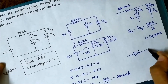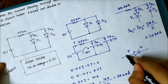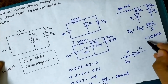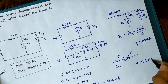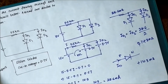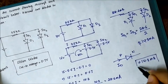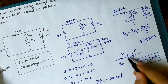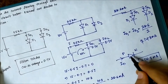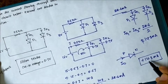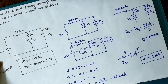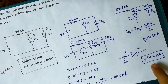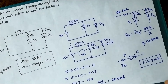The current is flowing from p to n through the diode, and it is positive — positive 14.3 milliampere. This means our assumption that the two diodes are on is correct, because the current is positive and flows from p to n. If the current had been negative, say minus 14.3 milliampere, then the diodes would have been off and our assumption would have been wrong. Since the current is positive, our assumption is confirmed.